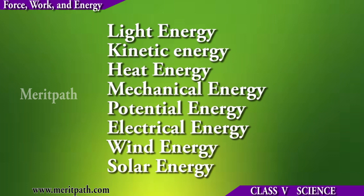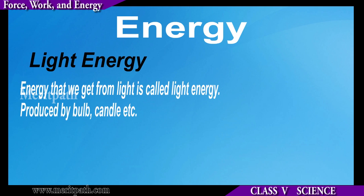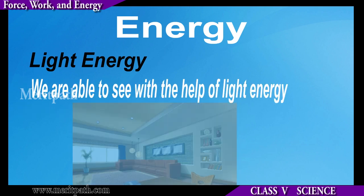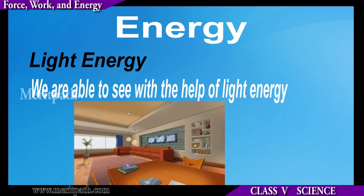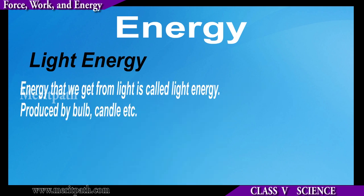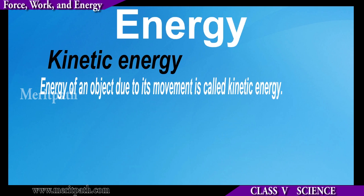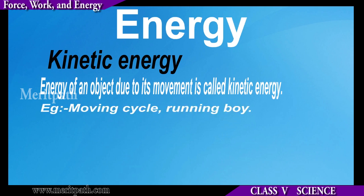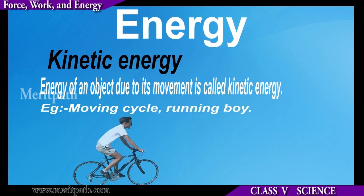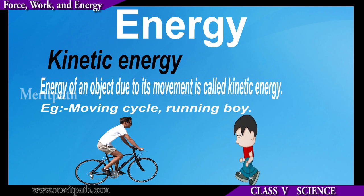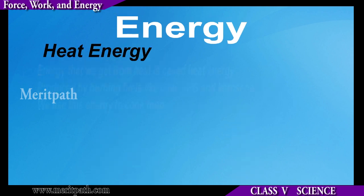Light energy is the energy we get from light. With the help of this energy we are able to see. Examples include the energy produced by a bulb, tube light, candle, etc. Kinetic energy is the energy of an object due to its movement. Examples include a moving bus and a running girl.